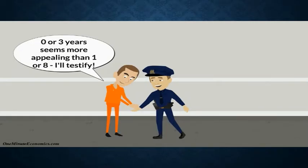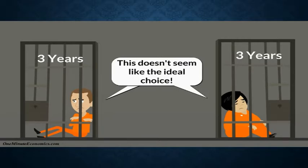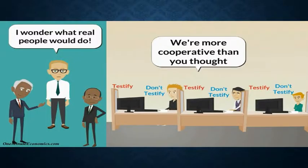Game theory therefore predicts that both of these rational, self-interested people would end up testifying and receive three years each. As a whole, both participants find themselves in a worse condition than if they had cooperated with each other. Please note, however, that various real-world experiments have proven people are more inclined to cooperate than this model would indicate.